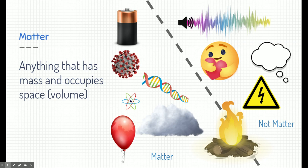Things to the right of the dotted line are not matter — they don't have mass. Sound is an example of that. Your emotions, your thoughts, and your feelings. Things like electricity and heat don't have mass or occupy space. They're more of just forms of energy.